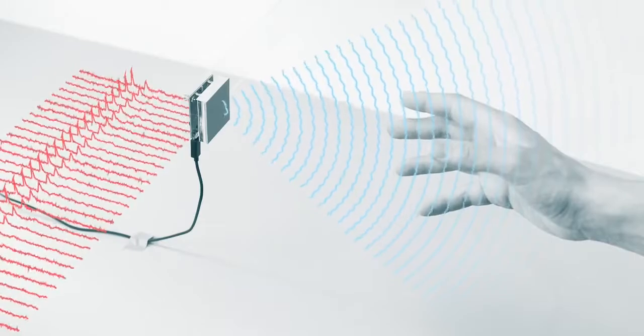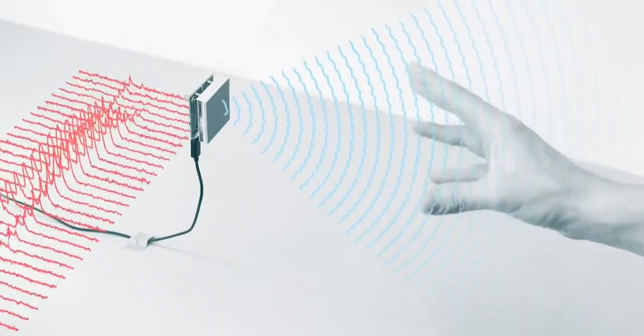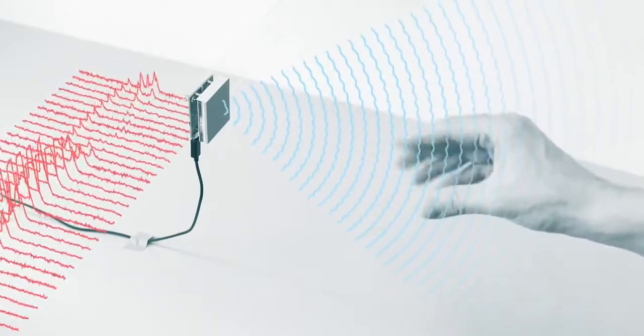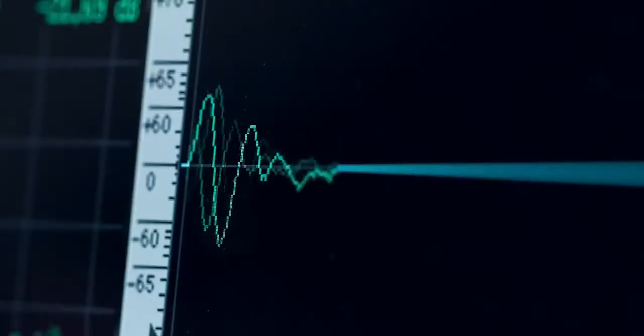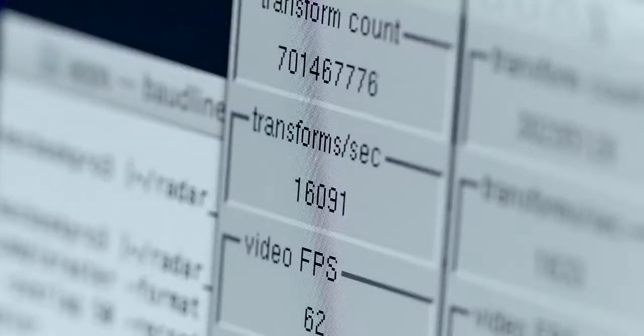The reason why we're able to interpret so much from this one radar signal is because of the full gesture recognition pipeline that we've built. The various stages of this pipeline are designed to extract specific gesture information from this one radar signal that we receive at a high frame rate.